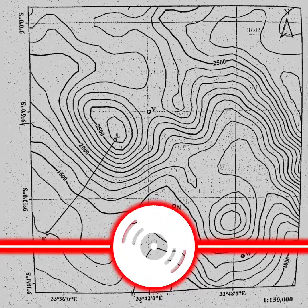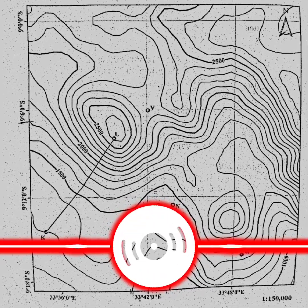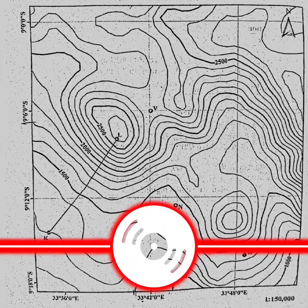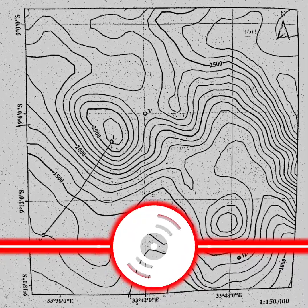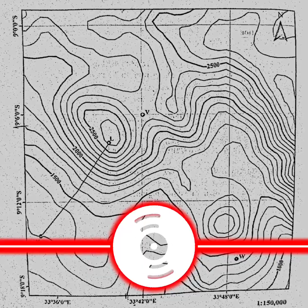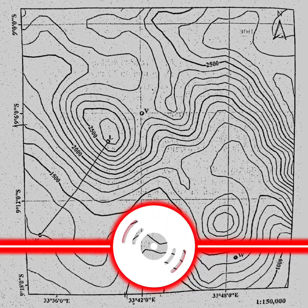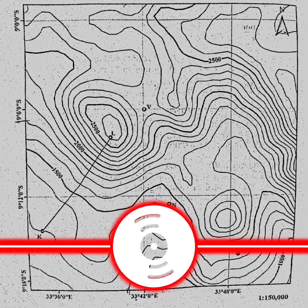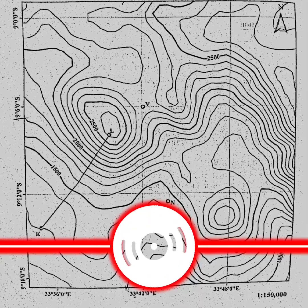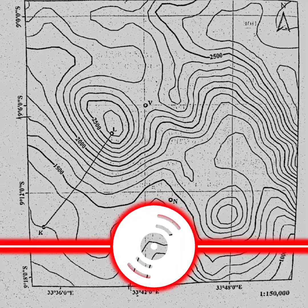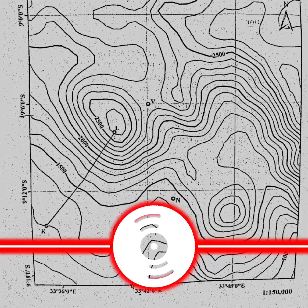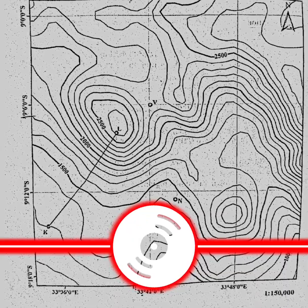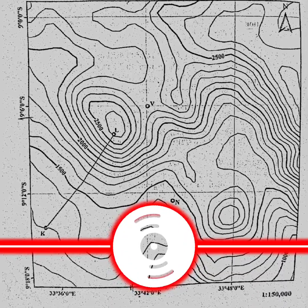Large scale maps are numerically smaller but contain more detailed information. Small scale maps have larger numbers because they cover larger areas but provide less detail. Goodbye students — don't forget to subscribe and share to follow along. Large scale maps are in number four.